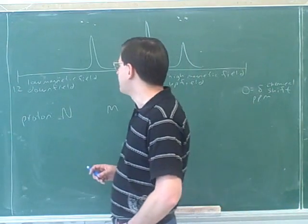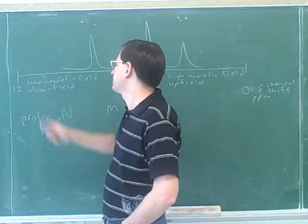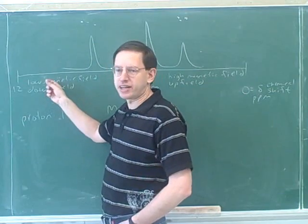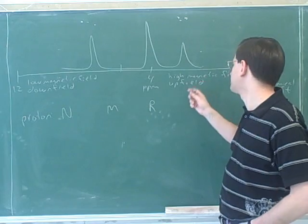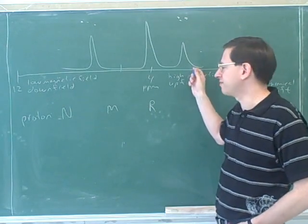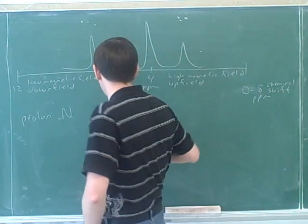So confusingly, we can see that if you have a large chemical shift, you're actually absorbing at a low magnetic field, downfield. If you have a small chemical shift, that's been defined for an absorption at a high magnetic field, which is upfield.